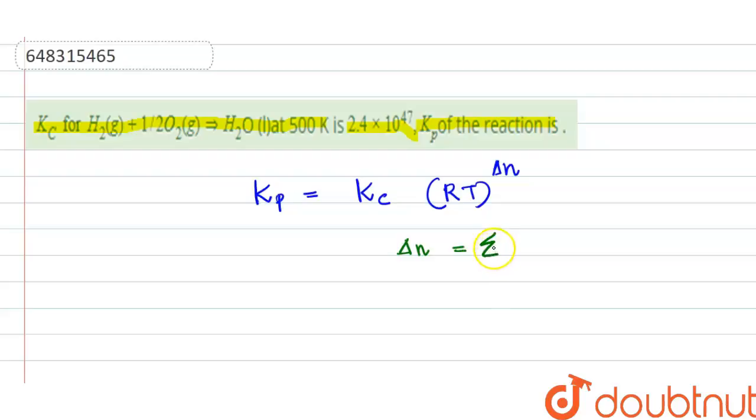Delta n is given by sigma—that is, the sum of number of moles of gaseous products minus sigma number of moles of gaseous reactants.